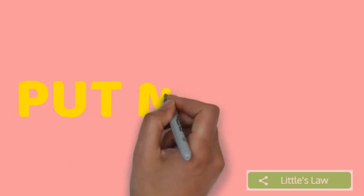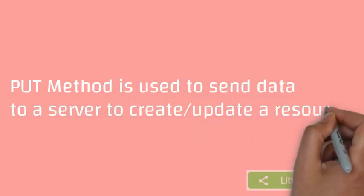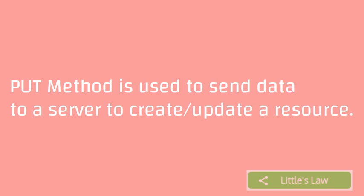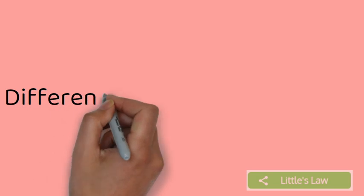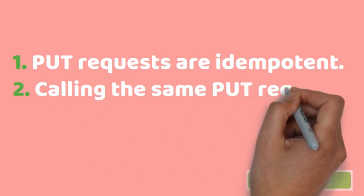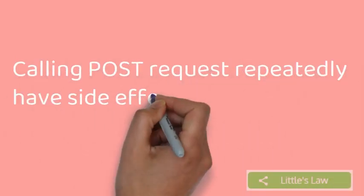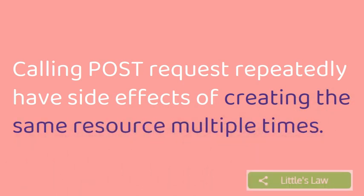Next comes the PUT method. The PUT method replaces all the current representations of the target resource with the uploaded content. The difference between POST and PUT is that PUT requests are idempotent — calling the same PUT request multiple times will always produce the same result. On the other hand, calling a POST request repeatedly has side effects of creating the same resource multiple times.